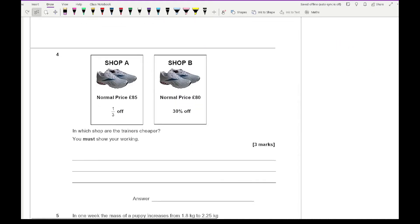Moving on to question four, it says shop A has a normal price of £85 with a third off. Shop B has a normal price of £80 with 30% off. In which shop will the trainers be cheaper? Looking at shop A, we want to take a third off £85.